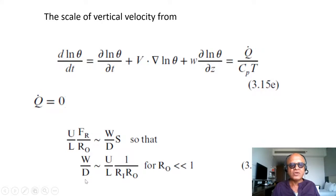So W/D ≈ U/L divided by 1/Ri·R₀, where now Ri is the ratio of potential to kinetic energy, or the Richardson number. Where are we going with that?